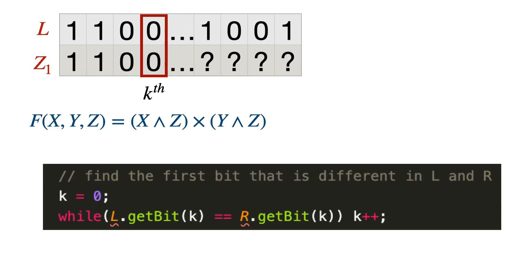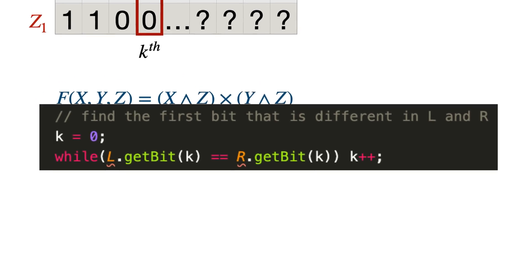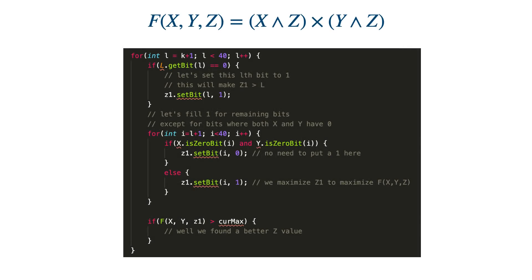I'll walk you through the code. First finding the kth bit, which was nothing but the first bit where L and R differ. I initialize k to zero and perform a while loop wherein I'm checking till L and R having the same kth bit, just increment k. When this while loop will break, I know that k is pointing to that bit where L is a zero and R is having one.